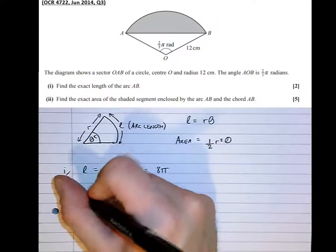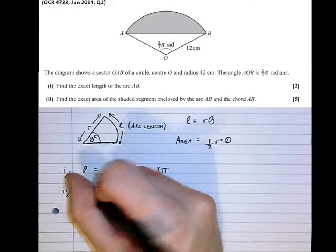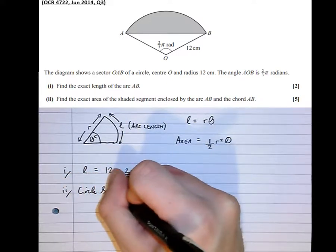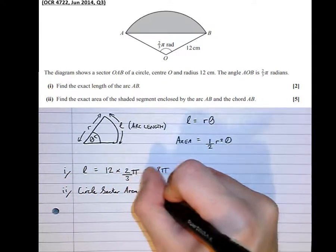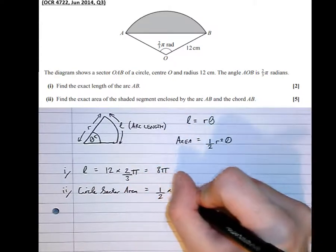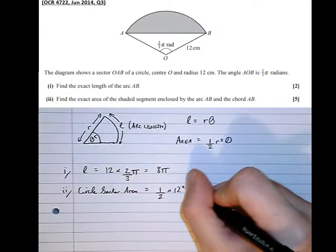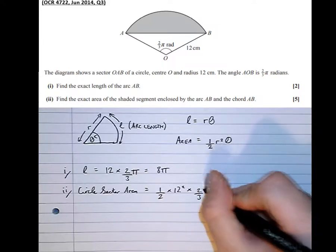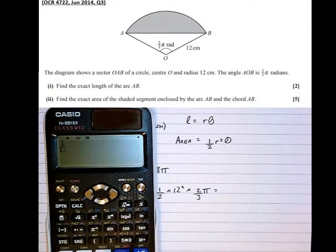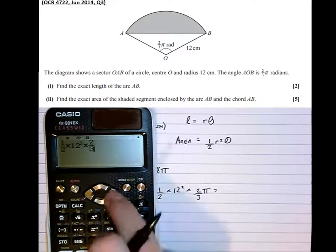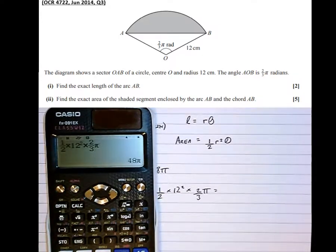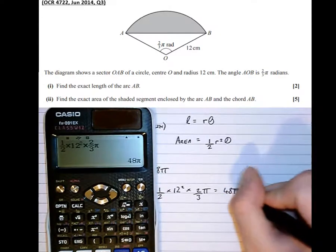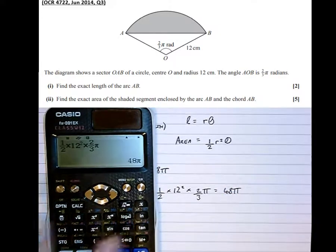OK. So, the circle sector has area a half times R squared times theta, which turns out to be, popping in the calculator, one half times R squared times theta, which is equal to 48 pi. So that's the area of the full circle sector.